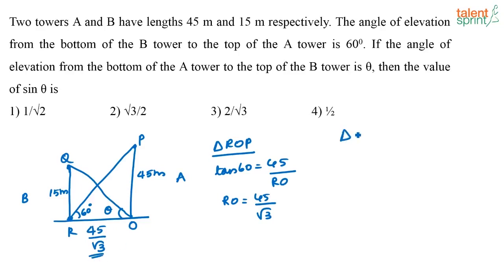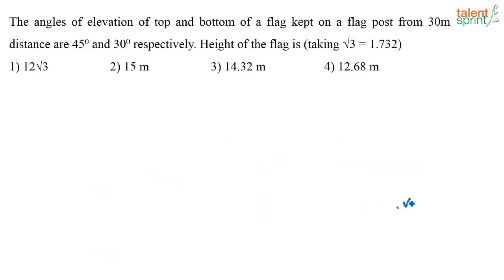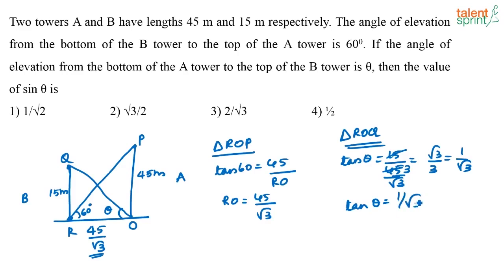Now consider triangle R, O, Q. I have tan theta equal to 15 divided by 45 by root 3. That is 15 divided by 45 by root 3, which is root 3 divided by 3, equal to 1 by root 3. So if tan theta equals 1 by root 3, then theta is equal to 30 degrees.